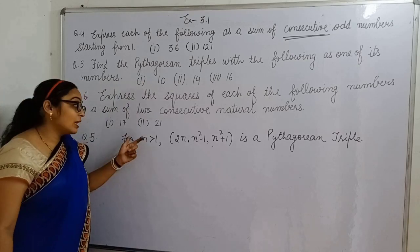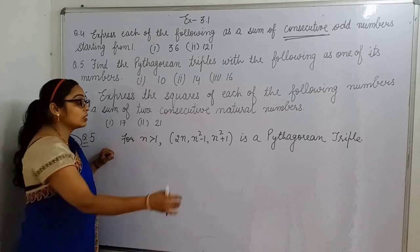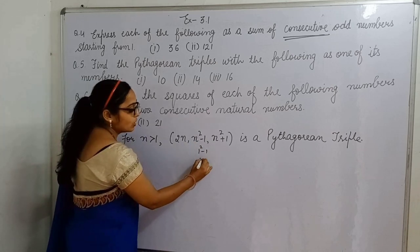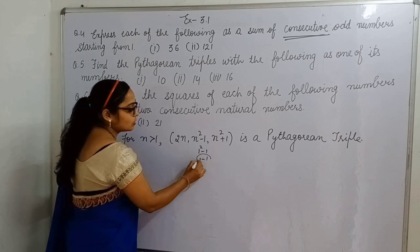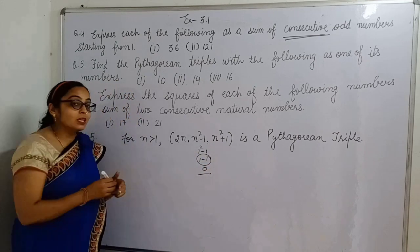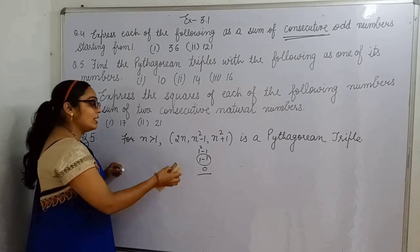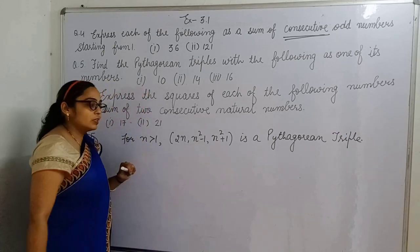I have told you that n is greater than one, why is that? Because if we put n value as one, then we put one square minus one. So, one minus one is zero. This is not a Pythagorean triplet, which is not the right angle triangle. That is why we put here n is greater than one.